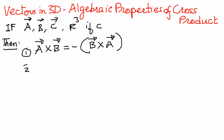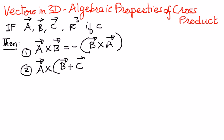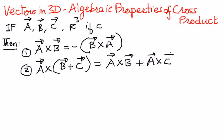The second property tells us that if we have three vectors — vector A cross (vector B plus vector C) — this is going to be equal to vector A cross vector B, plus vector A cross vector C.